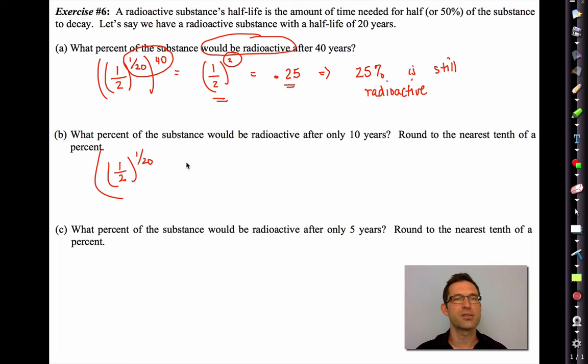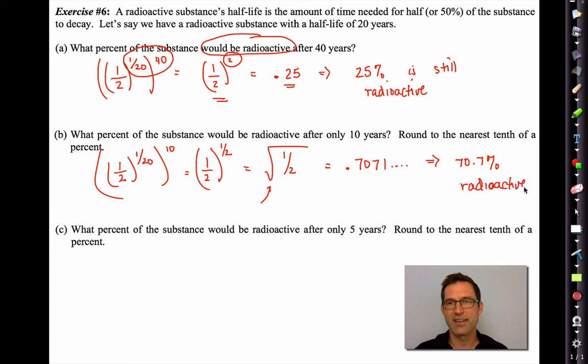It's pretty easy. What it really means is that we have one-half to the one-half. If you want, we have the square root of one-half. You don't really have to be thinking about this. You can just think about one-half to the one-half. And of course, you're going to let your calculator do that. 0.5 to the 0.5 gives me 0.7071, etc. So that means 70.7% is radioactive.